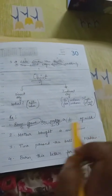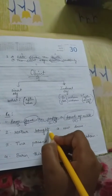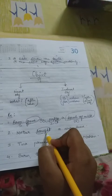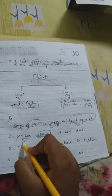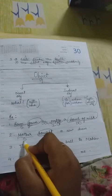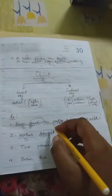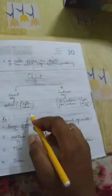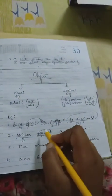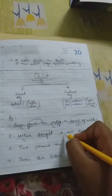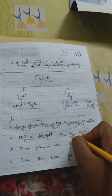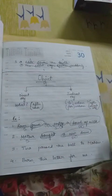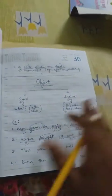Next example: Mother bought a new dress. The verb is 'bought' and the subject is Mother. Mother bought what? She bought a new dress — so 'a new dress' is the direct object. There is nothing written about to whom or for whom, so there is no indirect object here; only a direct object.